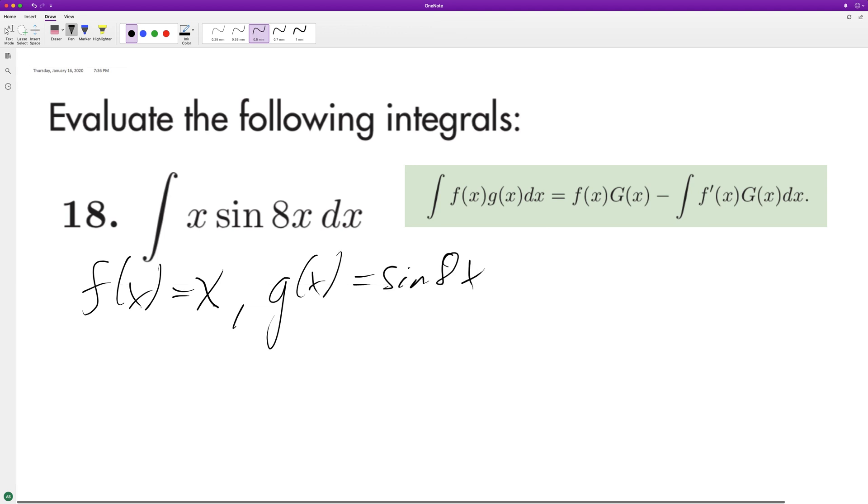f prime of x is going to be equal to 1, and capital G of x is going to be equal to I think that's negative one-eighth cosine of 8x.